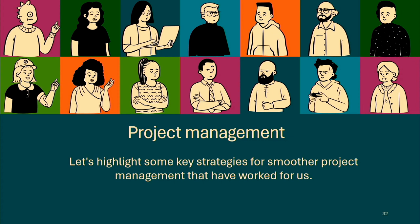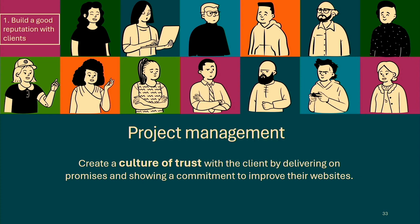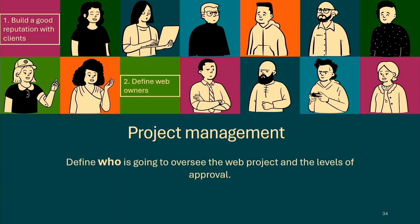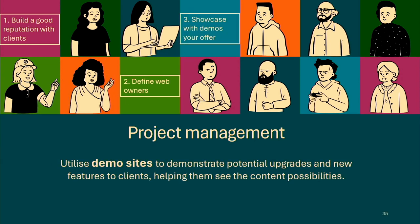After the content architecture and content types, let me give you a brief about the project management strategies that were successful for us — just the successful ones. First is setting a reputation through commitment and delivery. Second is defining your web owner: when working with an organization, we define a web owner — usually a communications person — who is the point of contact and who helps us get the site approved and launched. Third, you need to have a demo site, which helps us set limitations and expectations for clients.